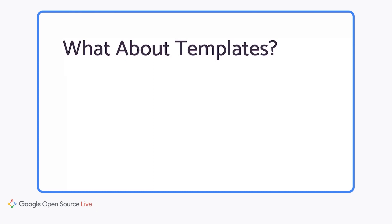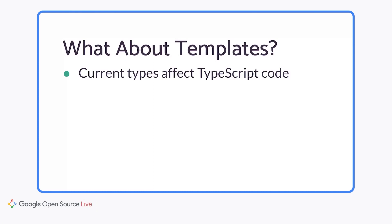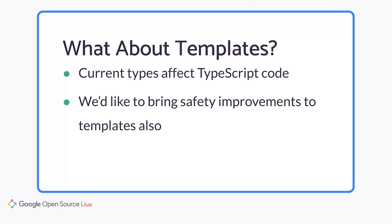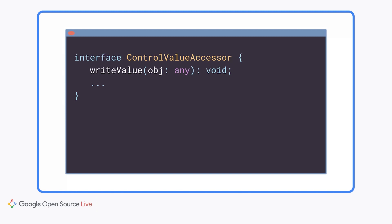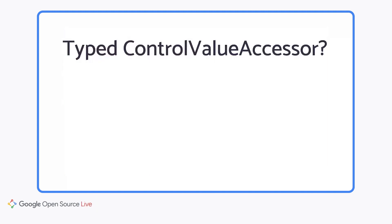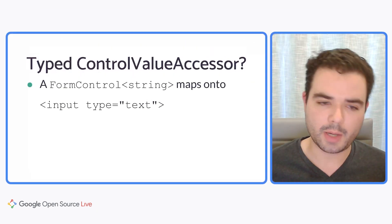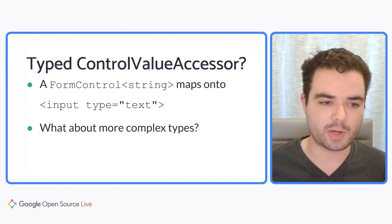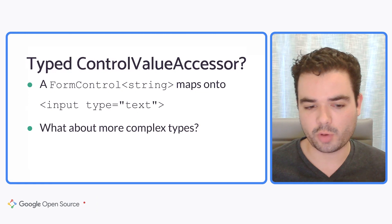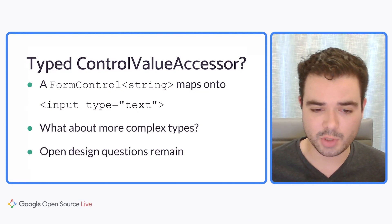A few words about our long-term plans for typed forms. One common question is about templates — the current types only affect TypeScript code, and we'd like to improve the templates as well. Consider the ControlValueAccessor interface: if you've ever implemented a custom form control, it's the bridge that connects data from your directive bindings in the template to your model classes in TypeScript. We could add a T type parameter, and it's fairly clear how this would work in the simplest case where a FormControl of string is just input type equals text. But there are open design questions about more complex types like FormControl of string or number, or nested form groups — so this is not yet solved.